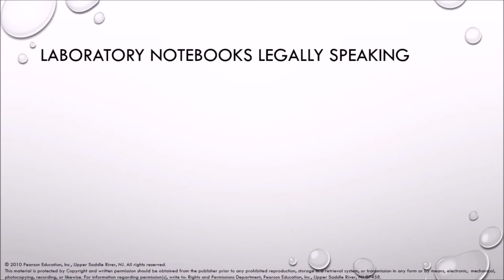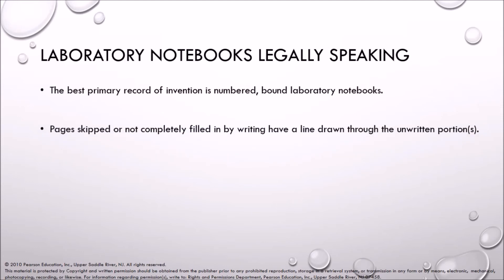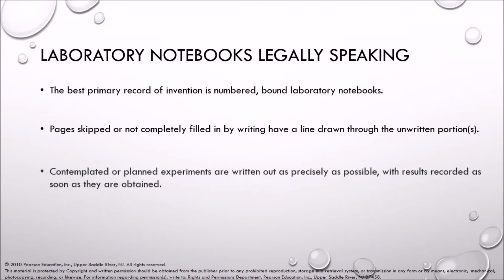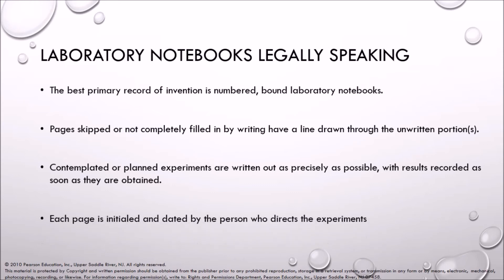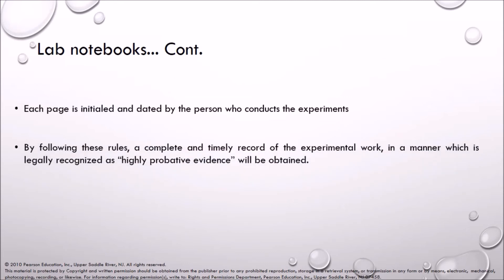Laboratory notebooks, legally speaking: the best primary record of invention is numbered, bound laboratory notebooks. Pages skipped or not completely filled in should have a line drawn through the unwritten portion. Contemplated or planned experiments are written out as precisely as possible, with results recorded as soon as they are obtained. Each page is initialed and dated by the person who conducts the experiments. By following these rules, a complete and timely record of experimental work in a manner legally recognized as highly probative evidence will be obtained.